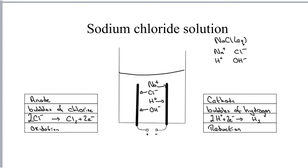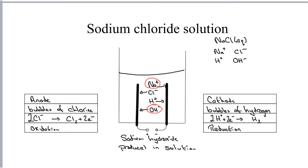The sodium ions and the hydroxide ions are both left in solution, therefore we get sodium hydroxide produced in solution. So this as an industrial process can be used to produce hydrogen, chlorine, and sodium hydroxide. This is a really useful industrial process, which we sometimes call the chloralkali industry because it's used to produce chlorine and sodium hydroxide, which is an alkali.